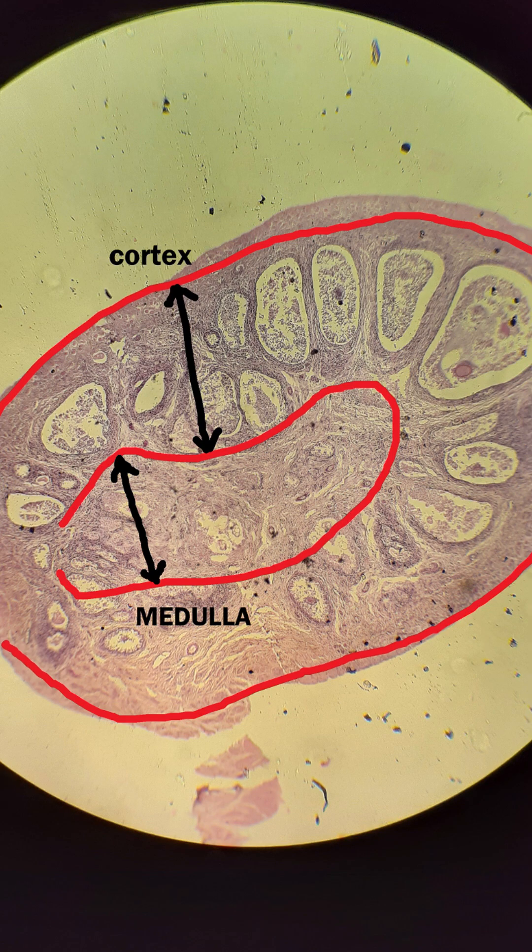So remember: follicles in the cortex, vessels in the medulla. That's the basic histology of the ovary.